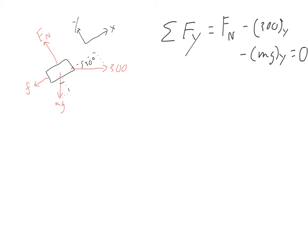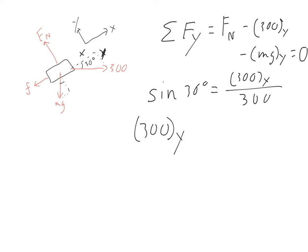Let's figure out the component values. For the y component of the applied 300-newton force, we use sine of 30 degrees: the y component equals 300 times sine of 30 degrees. Since sine of 30 degrees is exactly one half, that force component is 150 newtons.